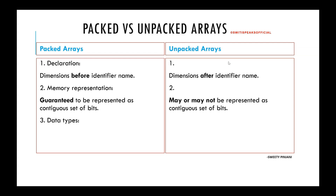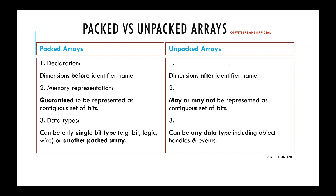The third point is what data types can be used. In case of a packed array, you can only use single-bit data types — meaning data that has a single bit by default if you are not explicitly specifying the size. For example, bit, logic, or wire are single-bit by default, or it can also be made up of another packed array. But in case of an unpacked array, there is no restriction on data type — it can take any data type.